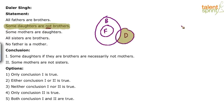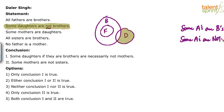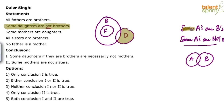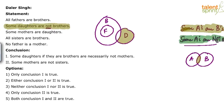The problem is that for 'some As are Bs' and 'some As are not Bs,' the diagram is the same. This is A and this is B. The difference is: when we say 'some As are Bs' we refer to the common overlapping region, but when we say 'some As are not Bs' we refer to the region of A which is not overlapping with B. So while the diagram is the same, the region we are talking about is different.